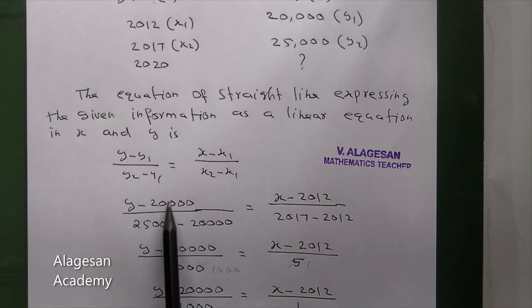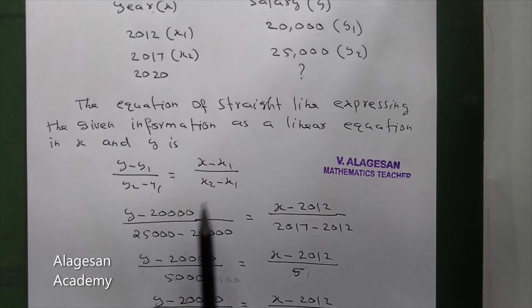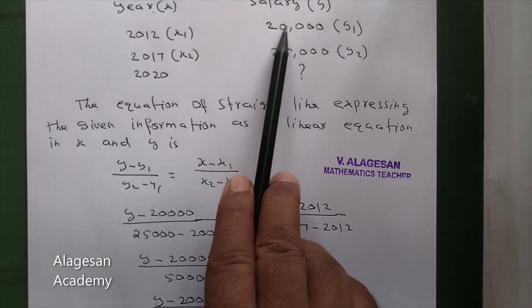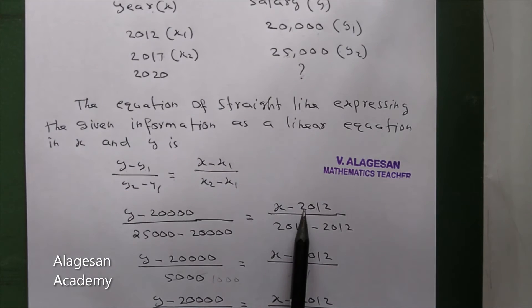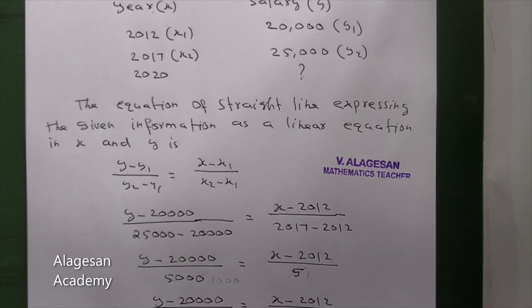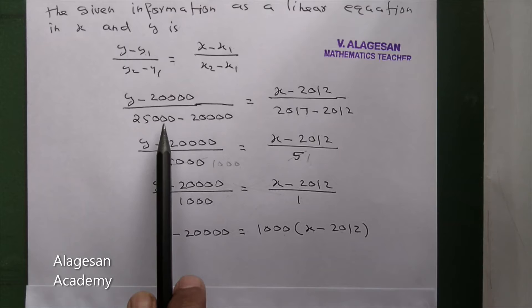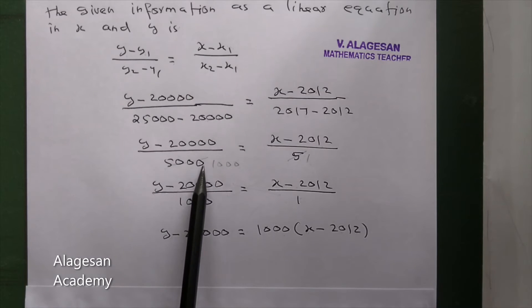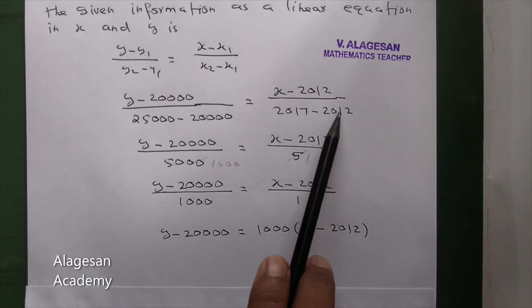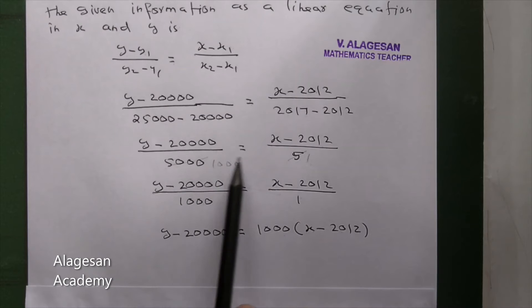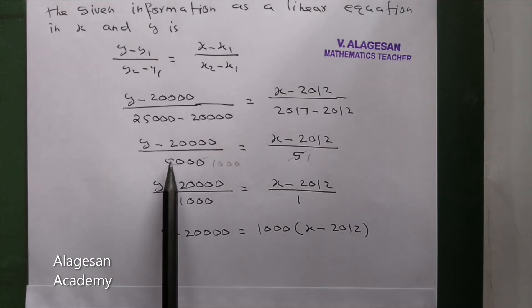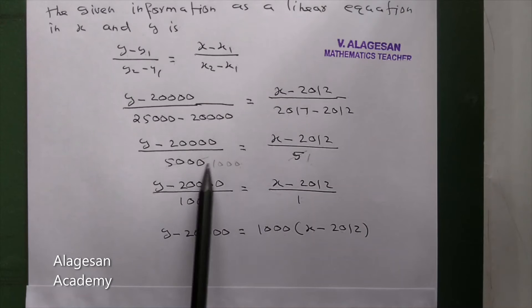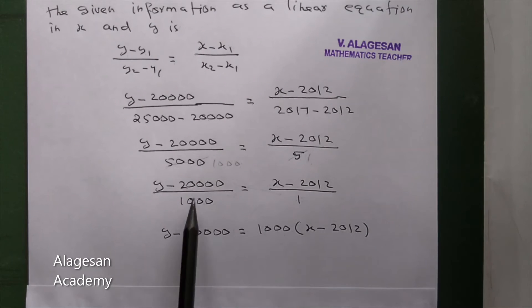Substitute: y minus y1, y1 is 20,000, by y2 minus y1, 25,000 minus 20,000, equal to x minus x1, x1 is 2012, so x minus 2012 by x2 minus x1, 2017 minus 2012. Simplify: we get 5000 equal to 5.